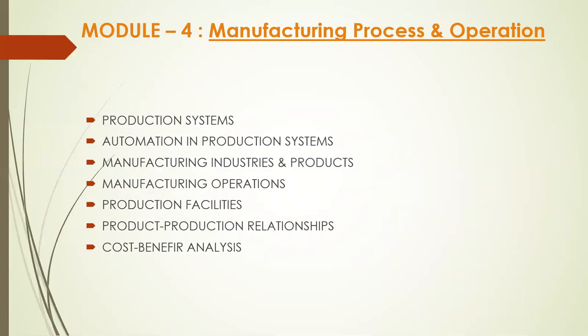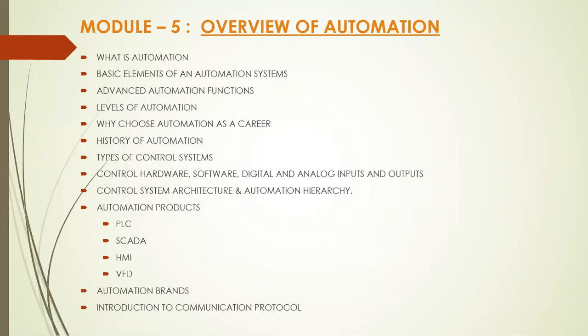The manufacturing process module gives you an overview of any industry — right from how the raw material is converted into a product part, or how that part is assembled to make a product. Then comes the overview of automation, where we are going to cover the history of automation and the importance of automation.